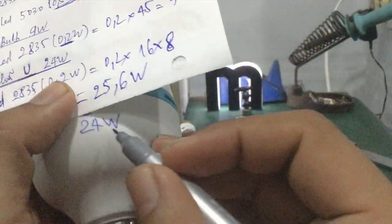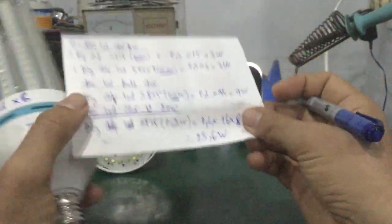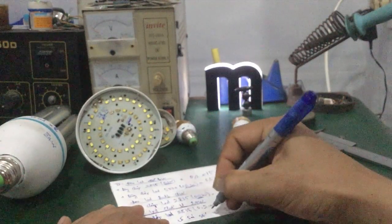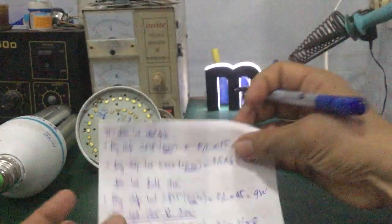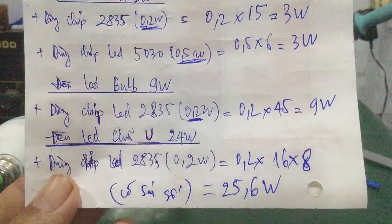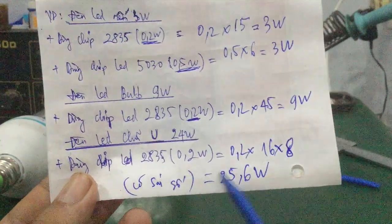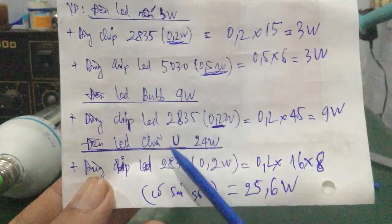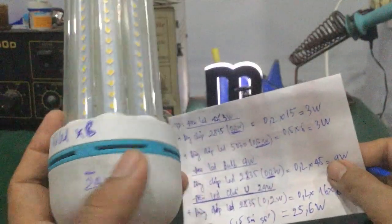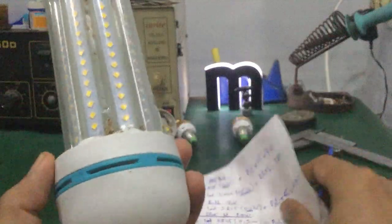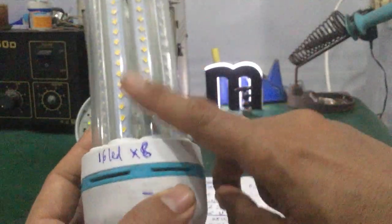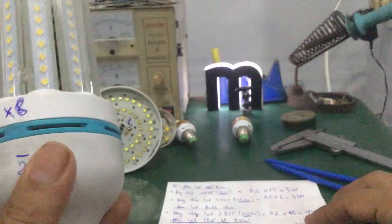Đây là cái sai số nha các bạn. Cái cách tính lý thuyết ra giá trị là 25,6W, còn thực tế là 24W — giữa lý thuyết và thực tế sẽ có một cái sai số, nhưng mà cái này nằm trong phần vi cho phép nha. Thì các bạn có thể tính được cái đèn LED này công suất tầm khoảng 24–25W là OK.